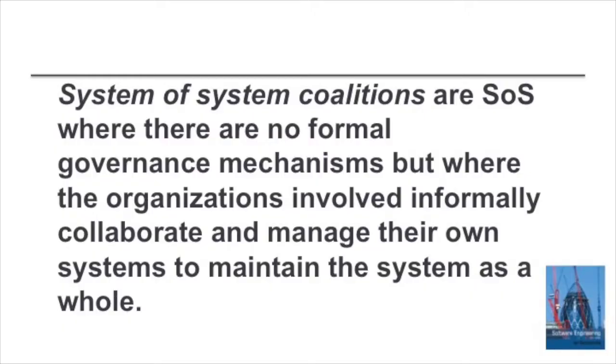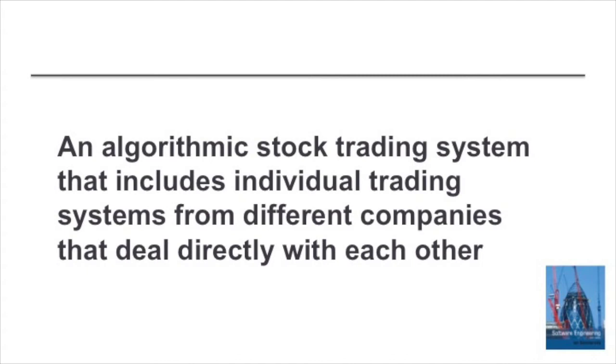A coalition of systems is a system of systems where there's no formal governance mechanism — the individual systems are informally managed. In reality, it's rare for there to be no management collaboration at all, but the managers of the systems come to informal arrangements as to how they will collaborate within the system of systems. An example of a coalition of systems would be an inter-company stock trading system where individual trading systems belonging to different companies deal directly with each other.